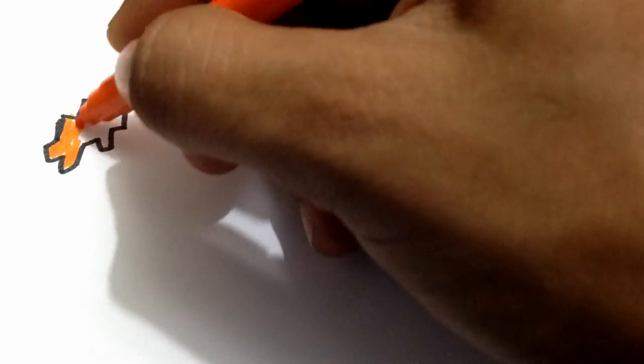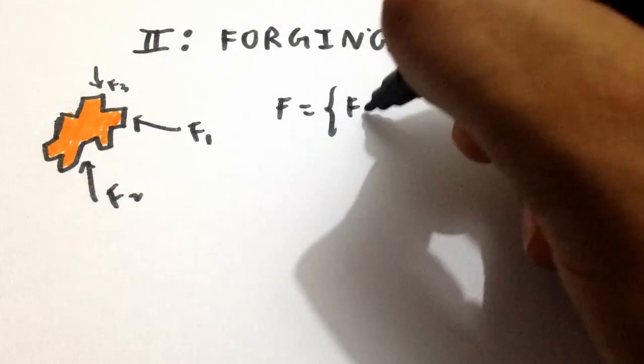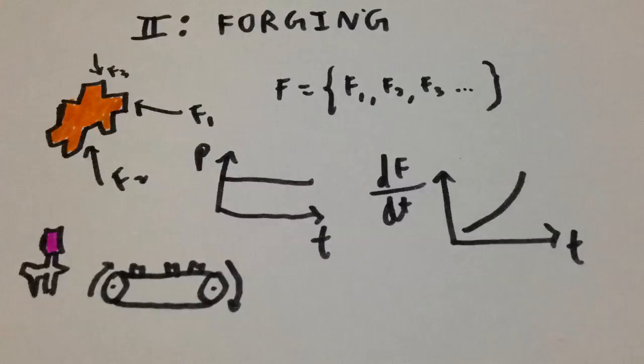Second in the list of forming processes is forging, which is a process of shaping heated metal by application of sudden blows or steady pressure. It is normally done by machines in mass production. It is of five types.